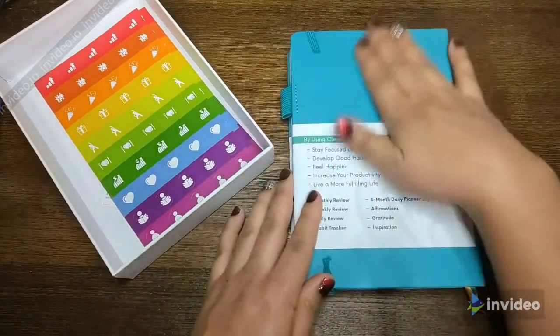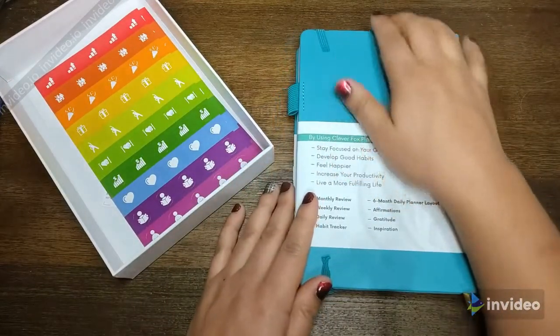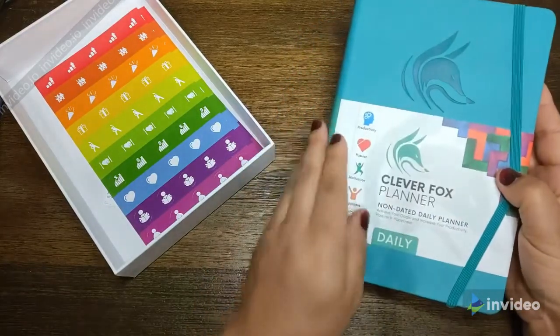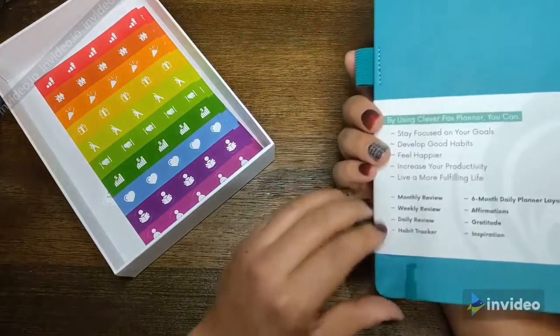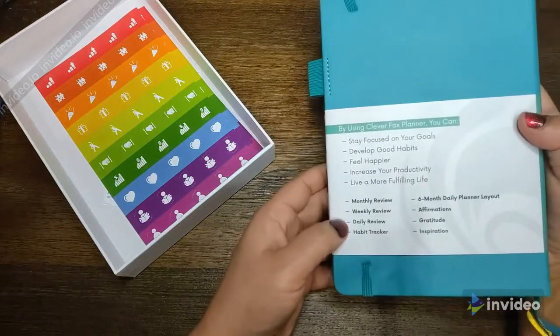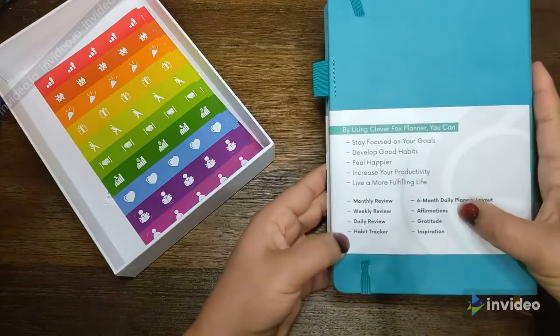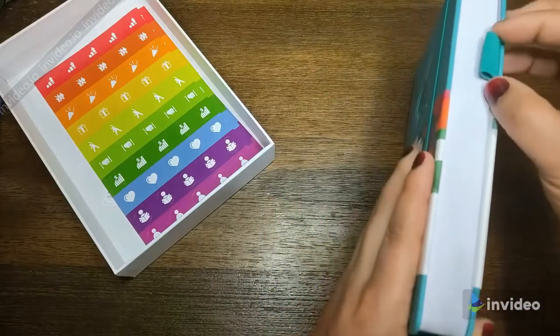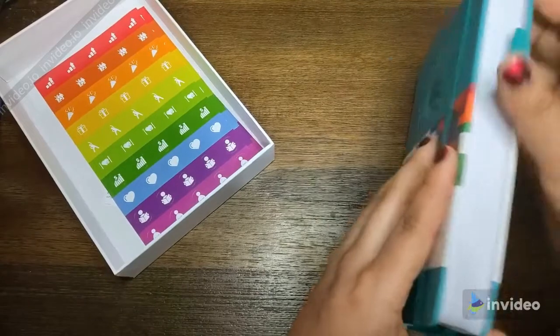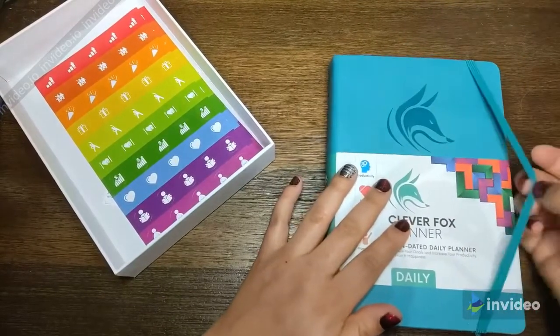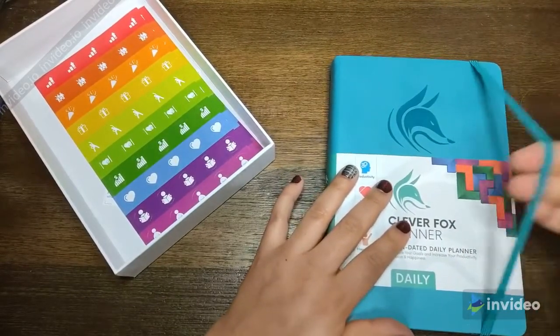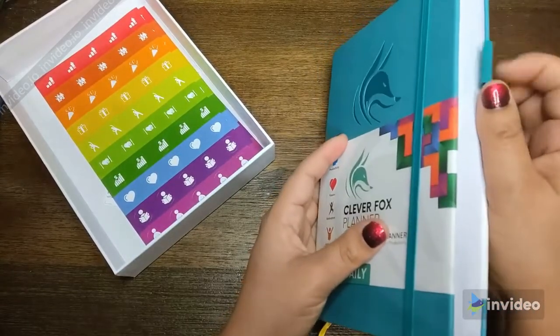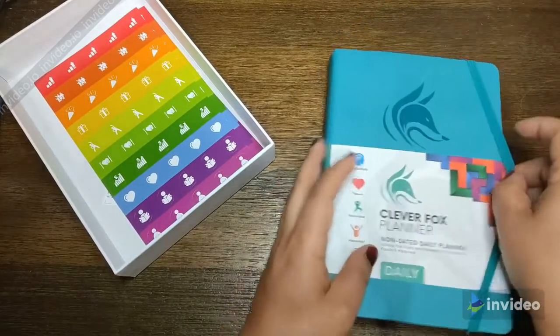It's kind of a soft touch cover, it's pretty nice. It has the little wraparound descriptor with a monthly review, weekly review, daily review, habit tracker, areas for affirmations and gratitudes. It looks like it has a pretty sturdy pen loop which I like, and then another feature is that elastic strap. Having a pen loop and the strap are two really important features, at least for me.